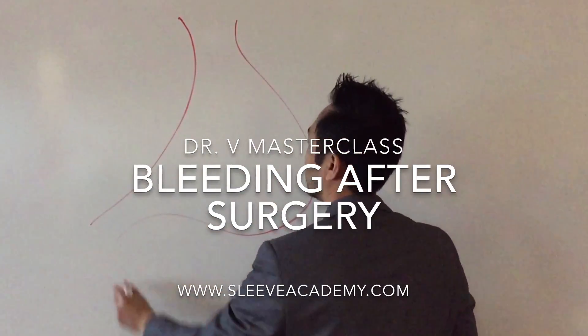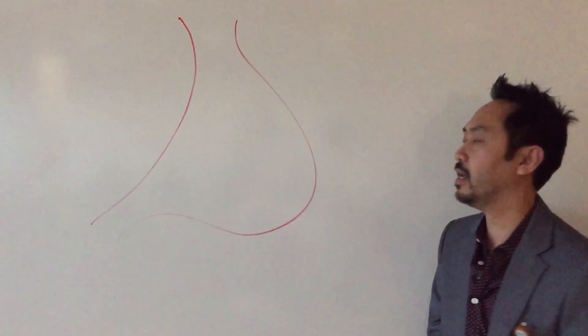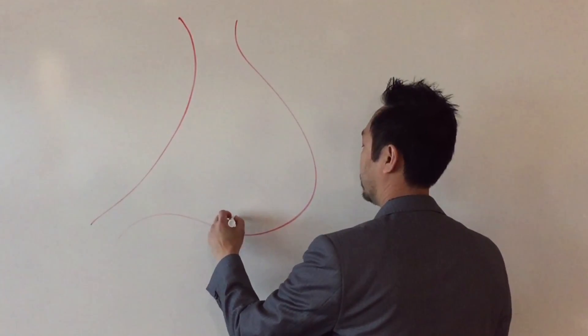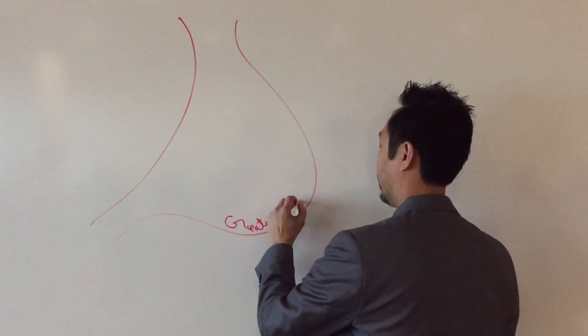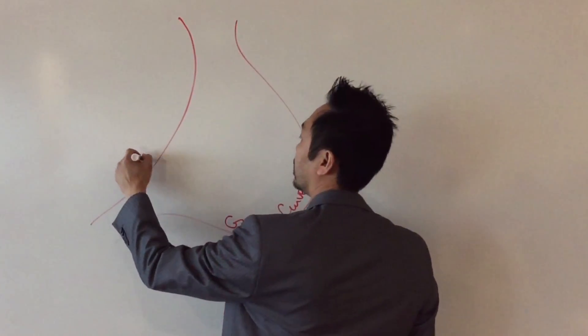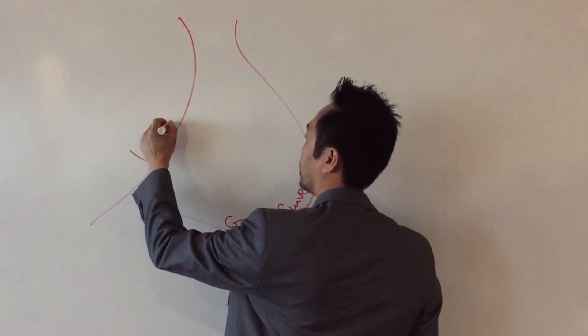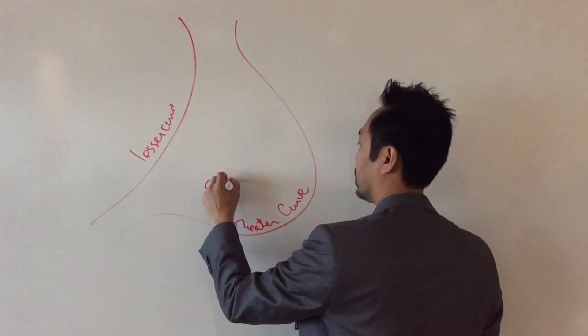So you want to draw a swoop, two little swoops like that. This is your greater curve. If there's a greater curve, there must be a lesser curve. So this is your stomach, yes?